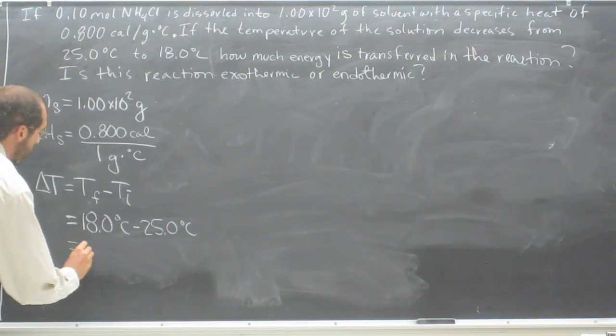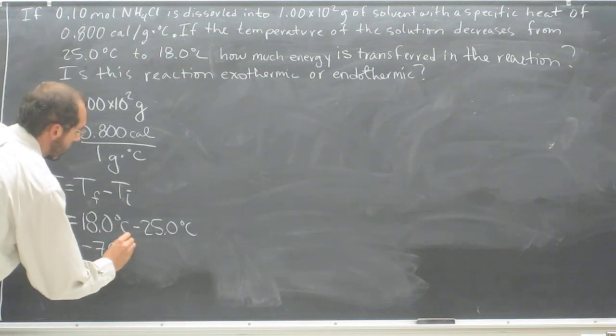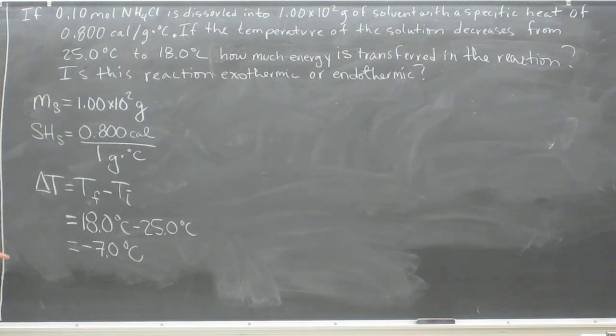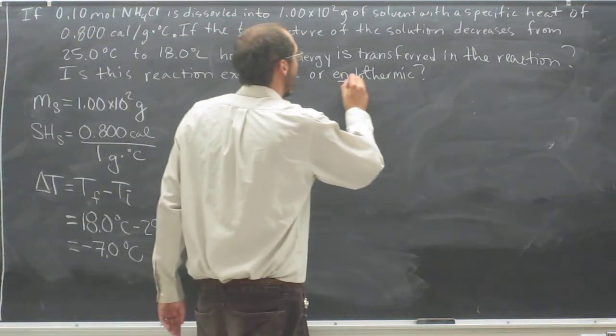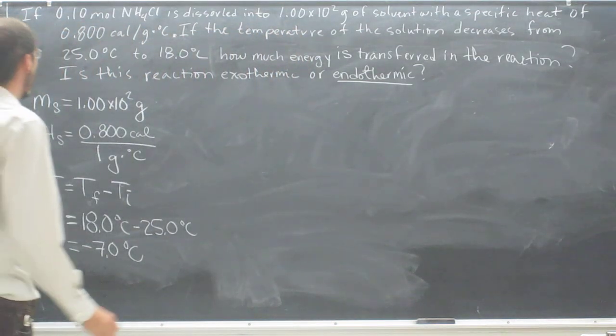So the change in temperature is going to be negative 7.0 degrees Celsius. Already you can see that since the temperature is decreasing, this is going to be an endothermic reaction, because the temperature is decreasing.